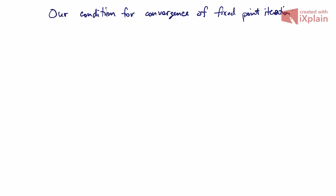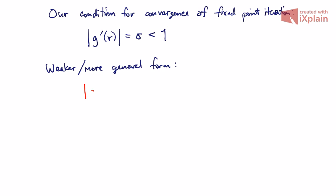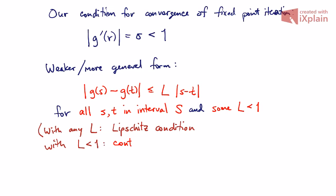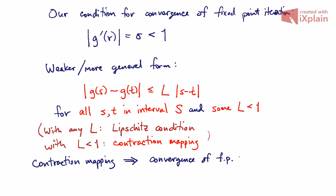One last comment. Our condition for convergence of the fixed-point iteration was that the absolute value of g'(r) is less than 1 — that's what we called sigma. There is a more general way to write this condition: the distance between g(s) and g(t) is less than or equal to L times the distance between s and t, for all pairs s and t in some interval S, and for some constant L less than 1. If you have any L at all, this is called a Lipschitz condition on g. If L is less than 1, it's called a contraction mapping condition. There's a famous theorem called the contraction mapping theorem, which says that if you have a contraction mapping in some interval and all of the fixed-point iteration terms stay in that interval, then you're guaranteed to converge to a unique fixed point.